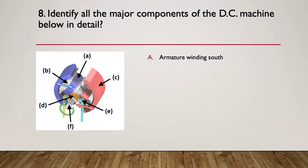So A is the armature winding south because it's colored blue. B, the armature pole south, again blue. C, fixed field magnet for north. D is the commutator. E is one of the brushes, and F is the shaft through the machine.